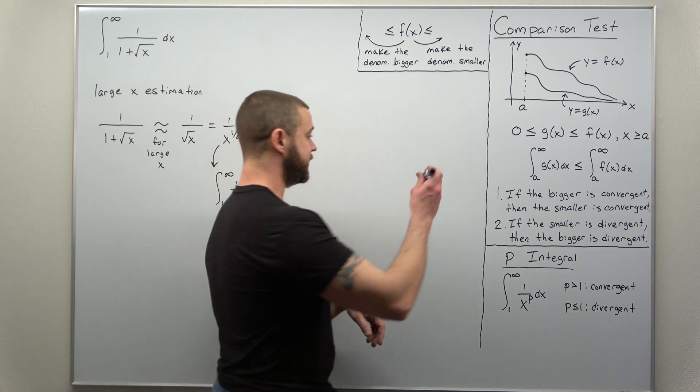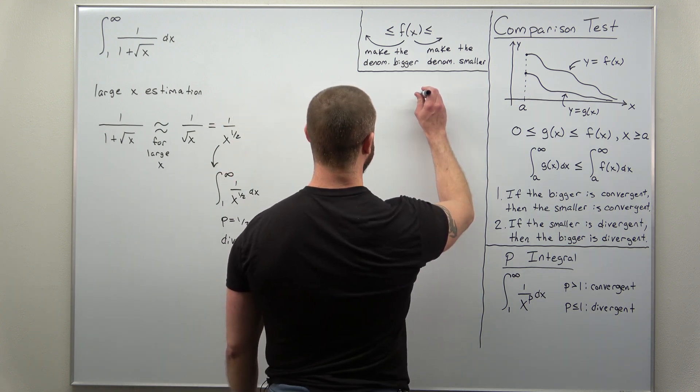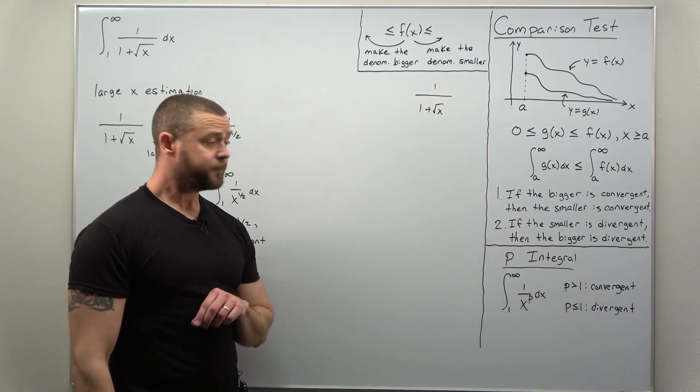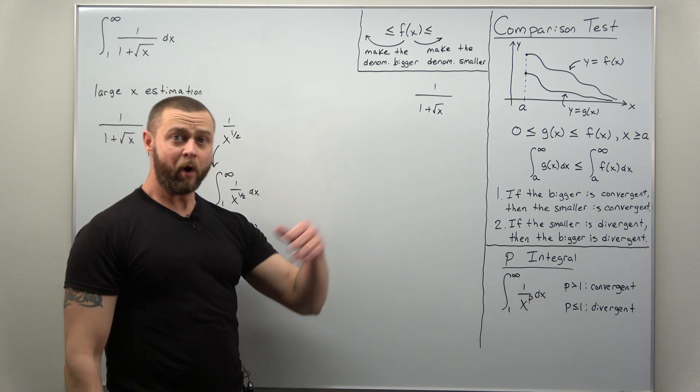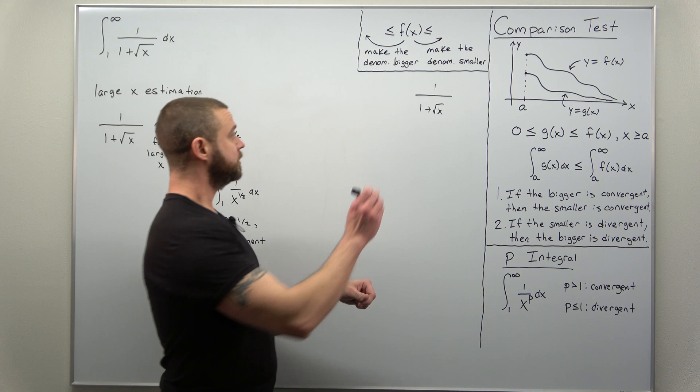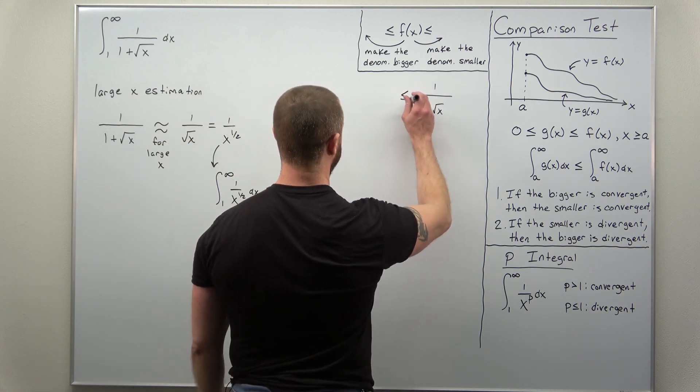There's a few ways you can do this. Let's consider our function here, 1 divided by 1 plus square root of x. We can make that 1 any number that's bigger, and we will get a smaller fraction or smaller function.